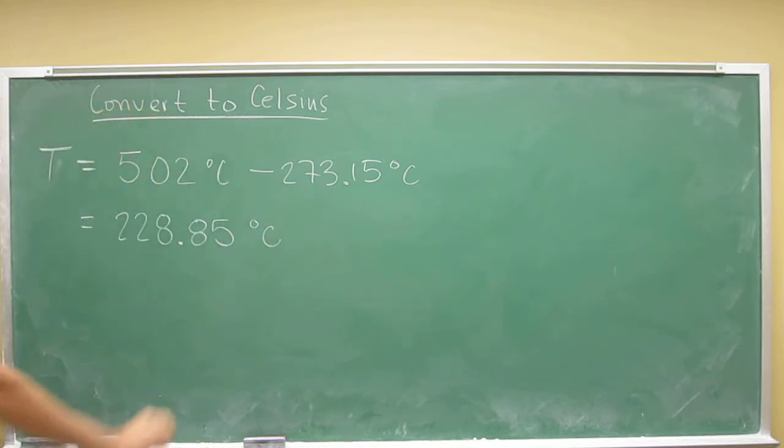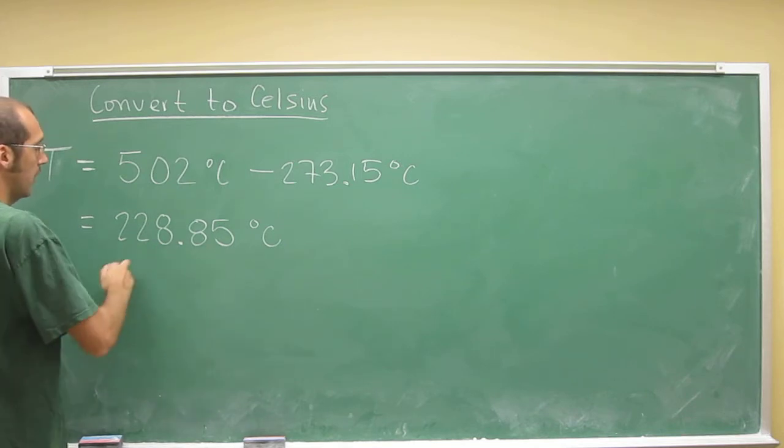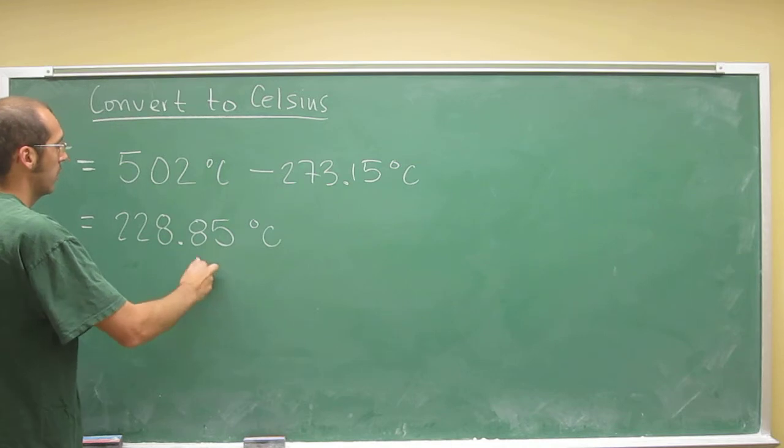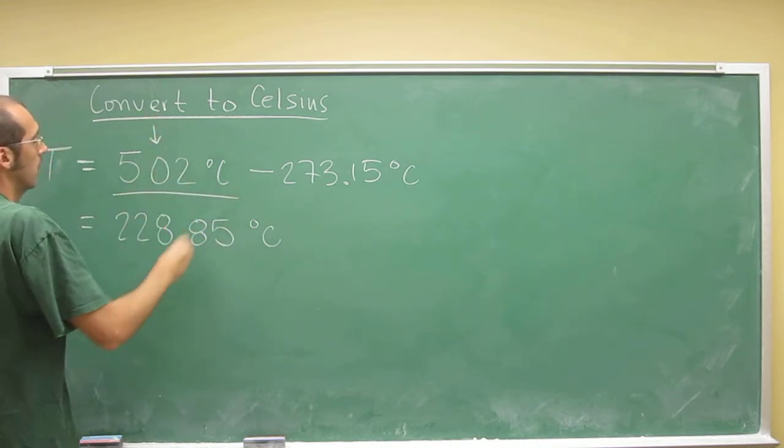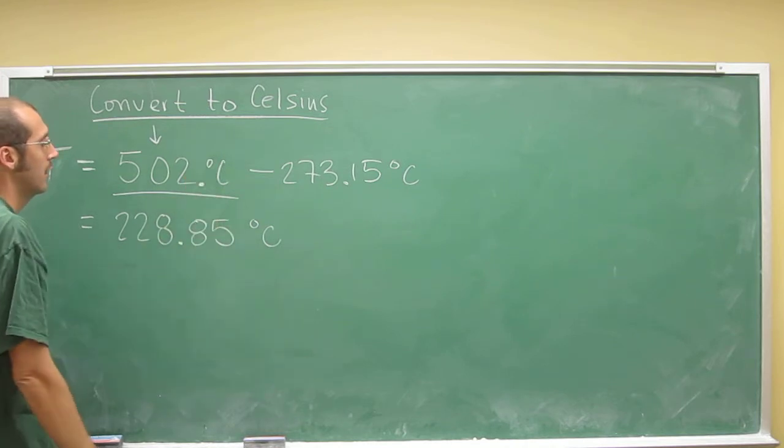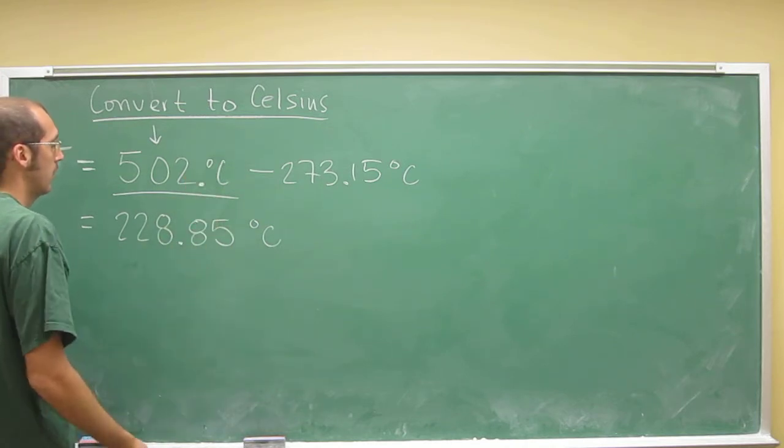So can we use all of those numbers? No, because we'd be telling ourselves or telling whoever that we were having a more precise answer than what was measured. So this was measured to zero digits after the decimal place, so this one has to be rounded.